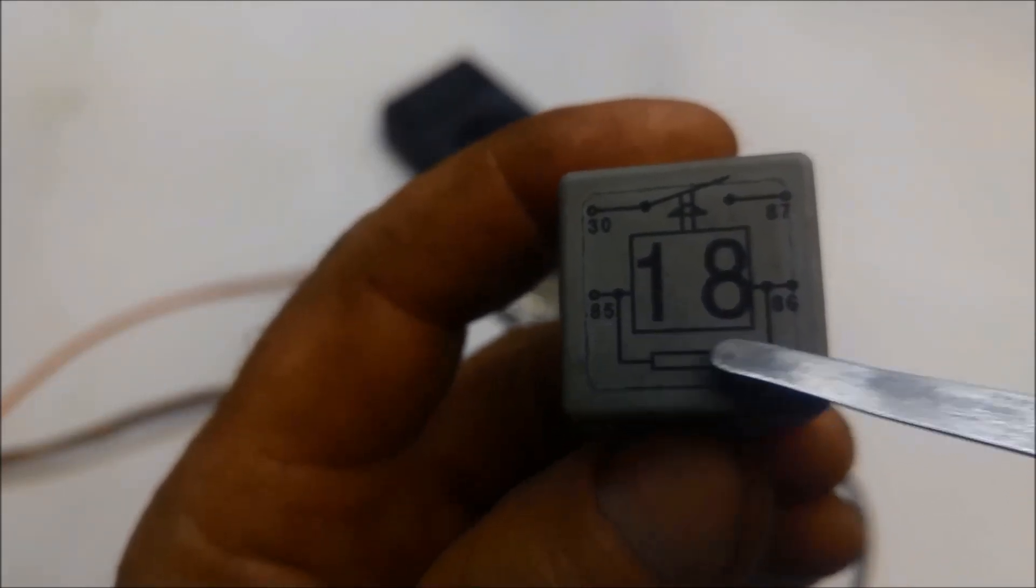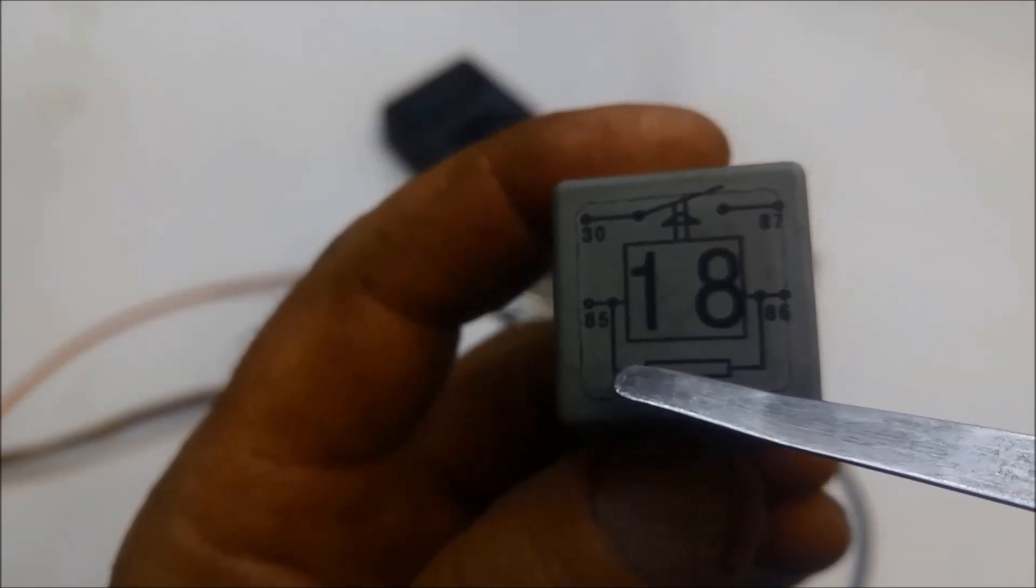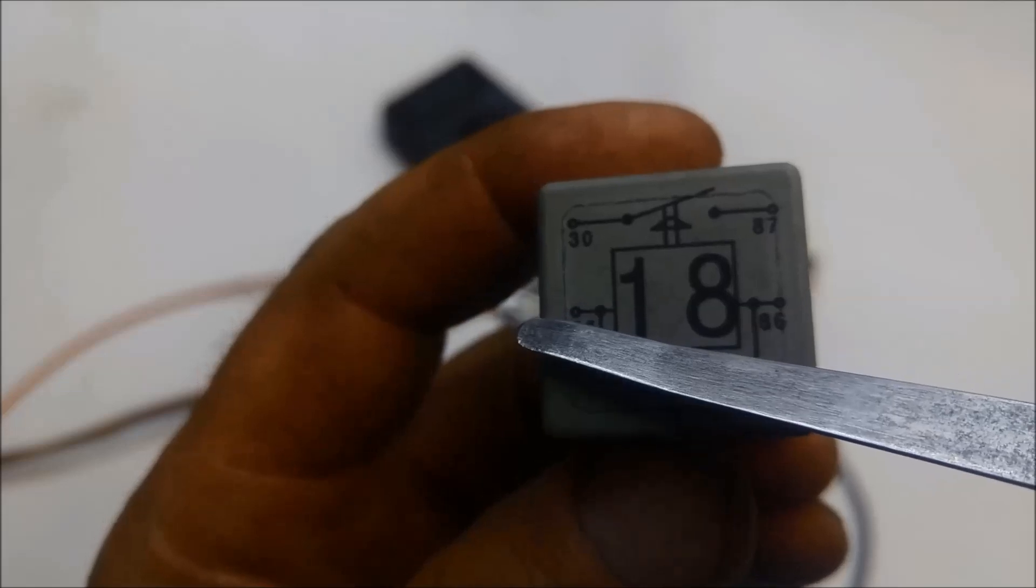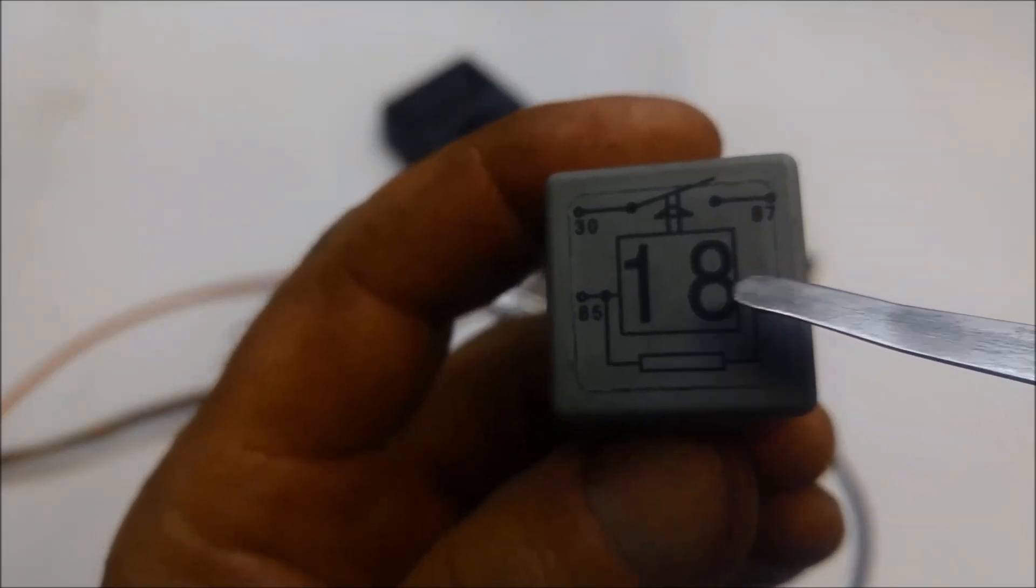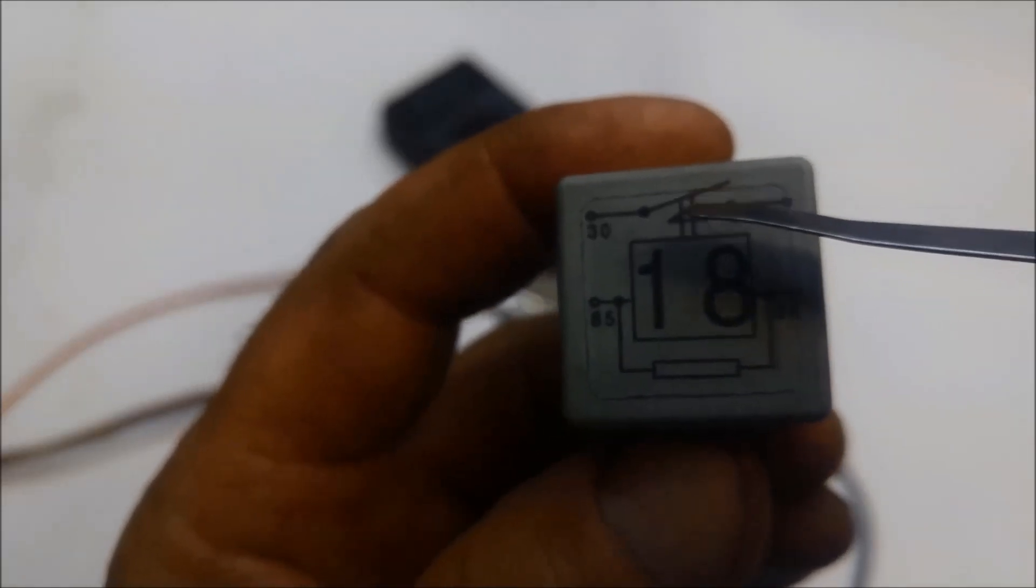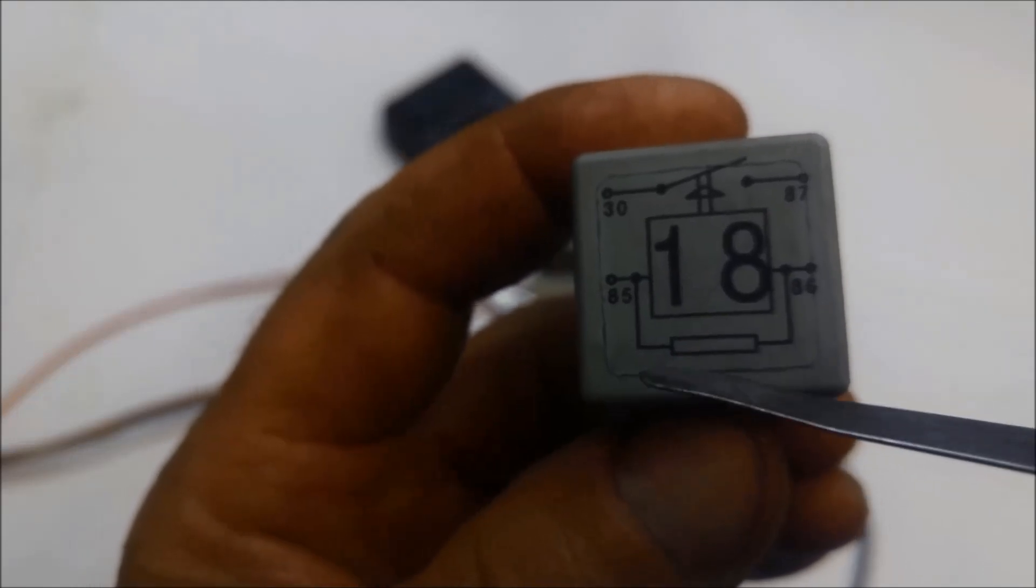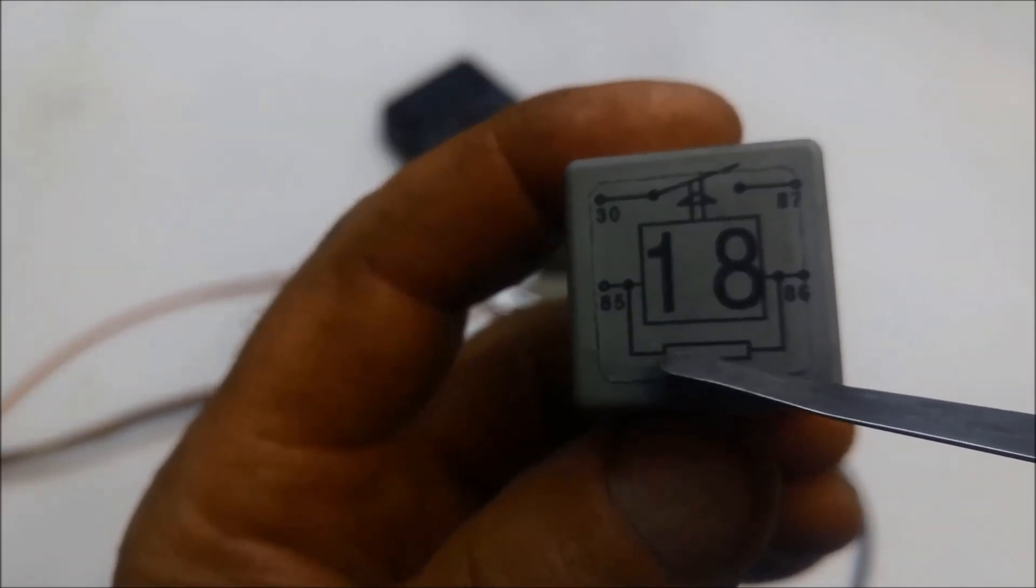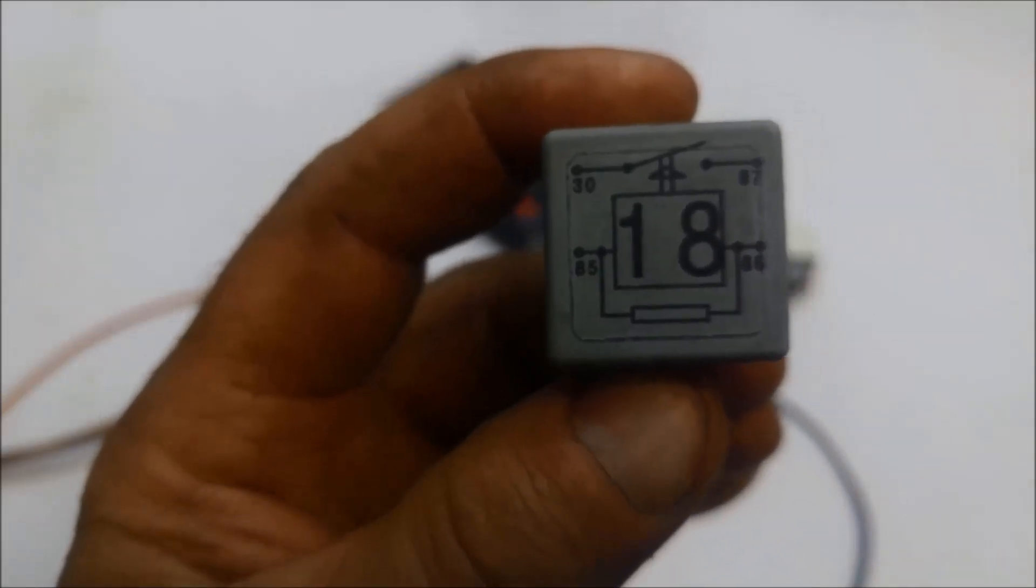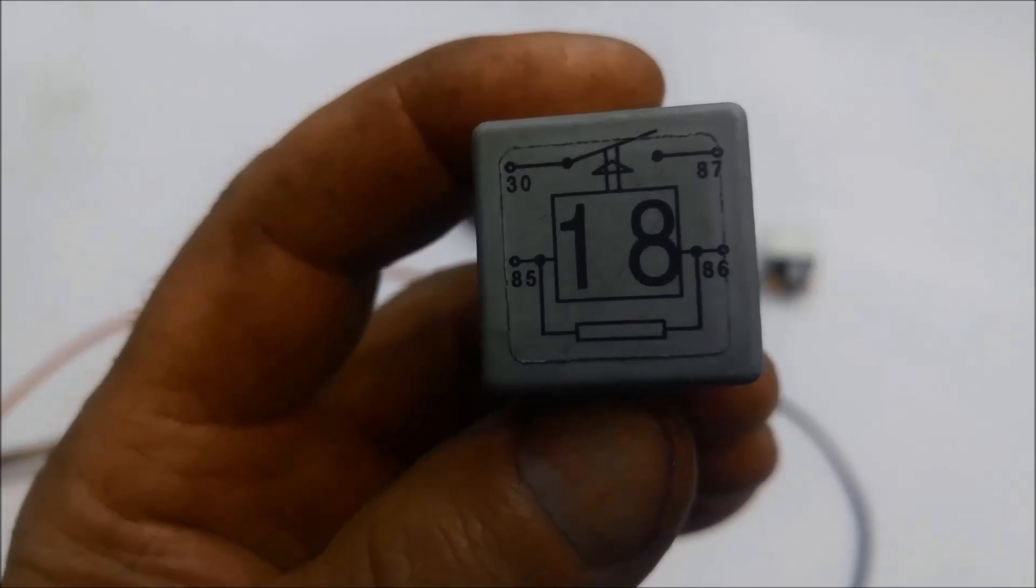And then over here you've got 85 and 86, and that shows there's a coil in that circuit. So basically the power is going through this circuit via a switch, and that will pull that switch shut. You've got a coil that makes a magnetic field and applies this switch. That's basically a simple explanation of how a relay works.